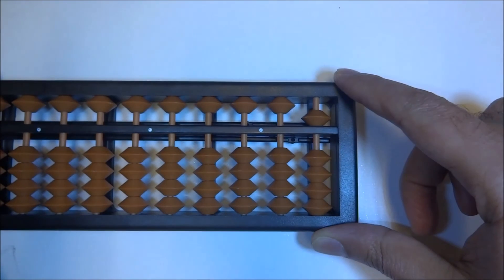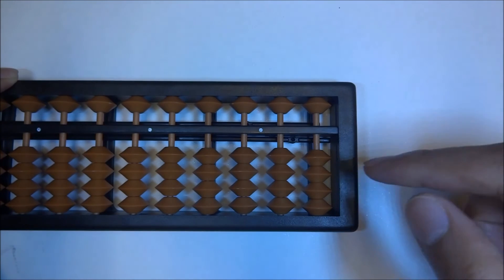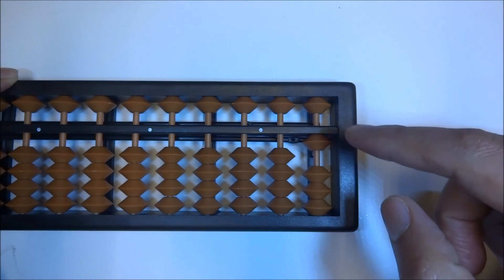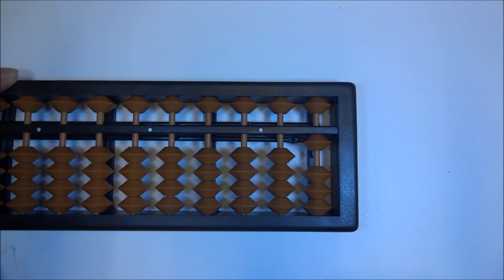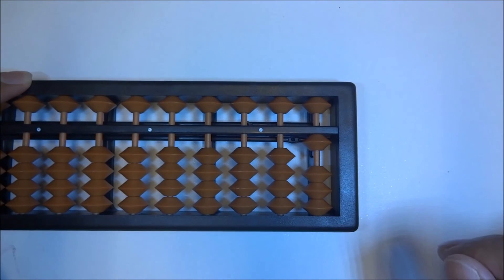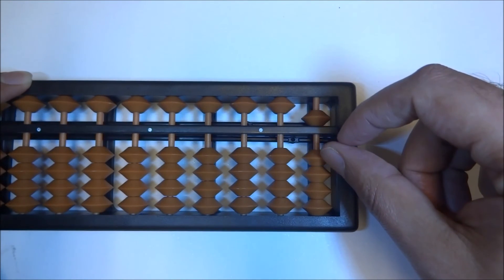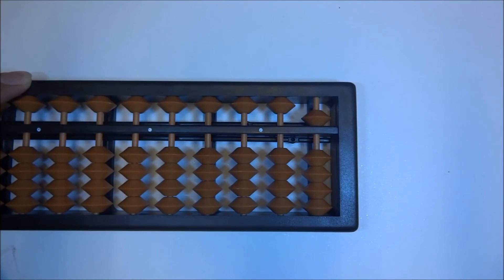Let's do that again. 1 plus 4 is what we want to do. Up 4. But we don't have 4 beads, so we're going to find the little friend of 4, which is 1. So we're going to say up 5 and down 1. Up 5 and down 1. 1 plus 4 is 5.